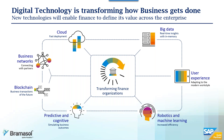Let's talk about how digital technology is transforming business, and specifically the finance organization of the future. Transforming finance organizations is really about transforming your entire organization. All of these various elements are adding up to influence how your business goes to market and how you develop what SAP calls the intelligent enterprise — we call it the digital business. Starting at the top left, everyone is turning to the cloud first for fast deployment, lower costs, and broader benefits.